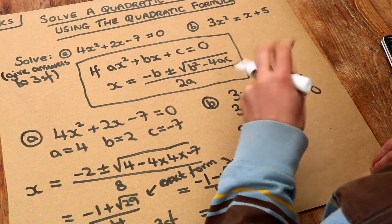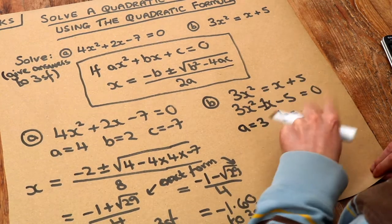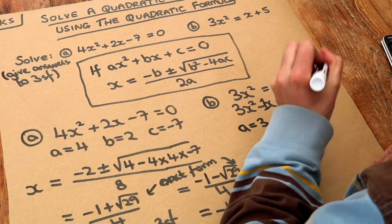B is the coefficient, the number in front of the x which is minus 1, and c is that final number which is minus 5.